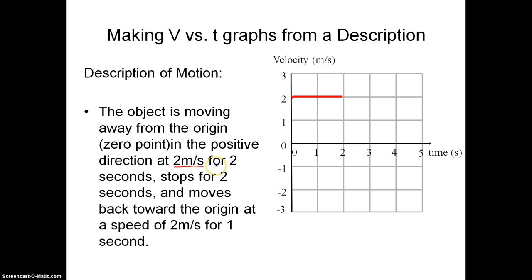Going back to the description, it says for 2 seconds, it does this. It then stops for 2 seconds. If you're not moving, your position is not changing, you have a velocity of 0. For the next 2 seconds, from 2 to 4, you need to have a horizontal line on 0, showing that the object is at rest. It has a 0 velocity. It's going 0 meters every second.